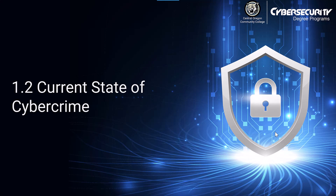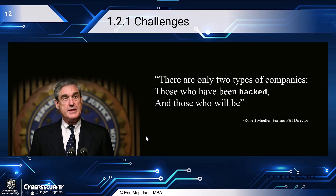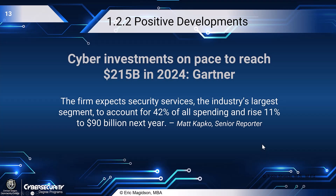Our second part here is the current state of cybercrime. Let's take a look at what's going on in cybercrime as of today. We'll start with a quote from Robert Mueller, former FBI director, who says: 'There are only two types of companies - those who have been hacked, and those who will be.' I would say there's actually maybe a third: those that have been hacked but have yet to realize it.